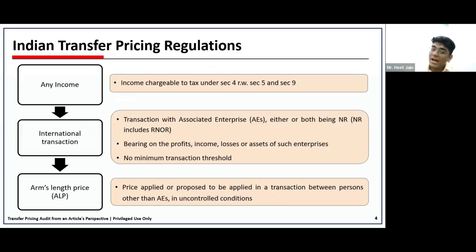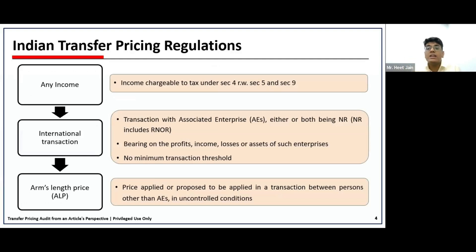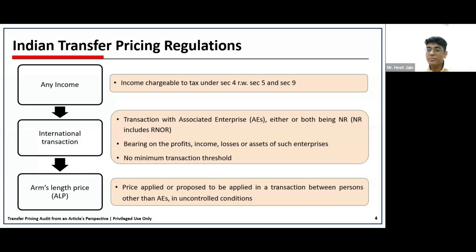Coming to the term 'income' — transfer pricing provisions cannot bring any income directly chargeable to tax under the act; it is not a charging provision. What transfer pricing actually intends to look at is whether the transaction that has been happening, whether the income offered under the act, is at arm's length price or not. This income also includes expenses and cost allocation agreements. A cost allocation agreement in simple words means a group entity is doing a certain activity on a global level and the cost is allocated between group entities based on their participation.